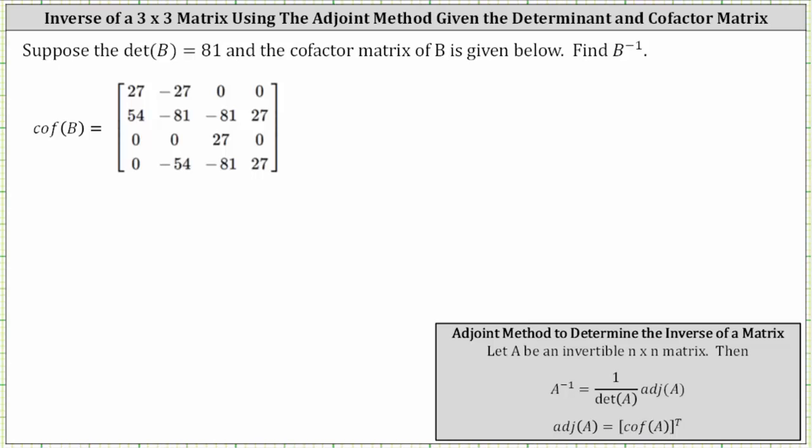Suppose the determinant of matrix B equals 81 and the cofactor matrix of B is given. We're asked to find B inverse, and we will use the adjoint method to determine B inverse.